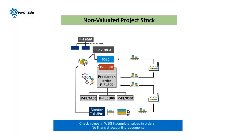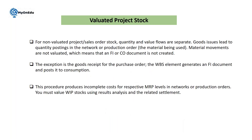If you select non-valuated, whatever material you manage in your transactions will show quantity only — value will not be available. For non-valuated project stock, quantity and value flows are separate. Goods issue leads to a quantity posting only; material movements are not evaluated, meaning no FI or CO document is created. The exception is the goods receipt for a purchase order — the WBS element generates an FI document and posts it to consumption.